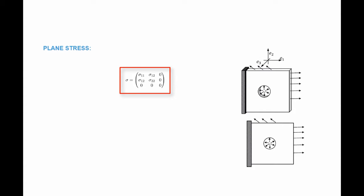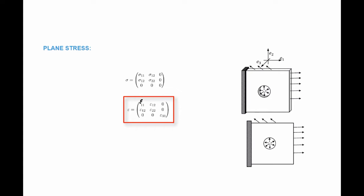The plate is allowed to freely deform in the third direction, so the stress sigma_33 is zero, and all the shear stresses out of plane are zero as well. In the plane stress condition, the plates are allowed to freely expand and contract in the third direction, so they develop epsilon_33. The strain matrix has non-zero epsilon_11, epsilon_12, epsilon_22, and epsilon_33.